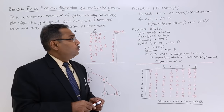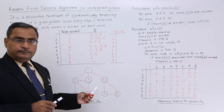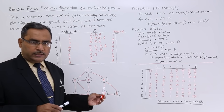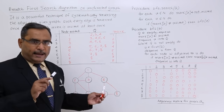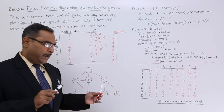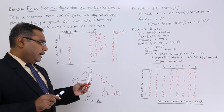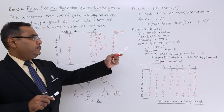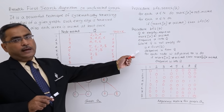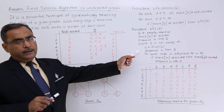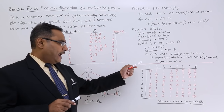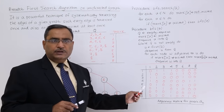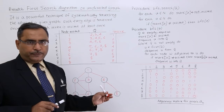We are having this particular graph with 8 nodes, so n is equal to 8. This graph cannot be fed to the algorithm directly, so we use the adjacency matrix representation of this particular graph.